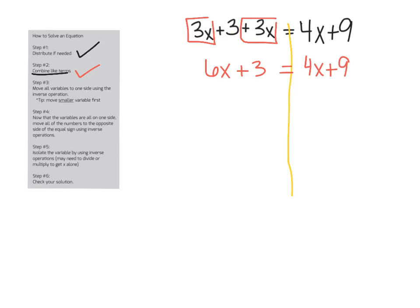Step three says move all the variables to one side using the inverse operation. So I'm looking at this saying I've got 6x on the left and 4x on the right. Remember my tip, move the smaller variable first. So what I'll do then is I'm going to subtract 4x from both sides to get rid of that one, but I have to also do that to the left side. So 6x minus 4x becomes 2x, and I bring down this plus 3 equals, now I just have 9 over on the right-hand side. We are done with step three.